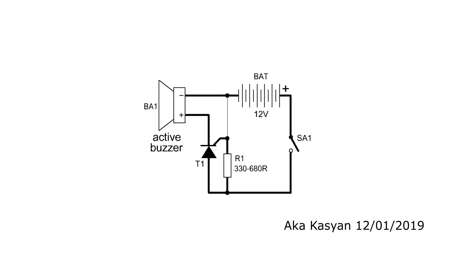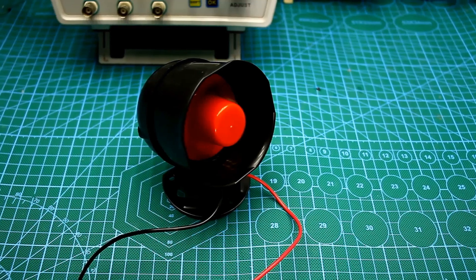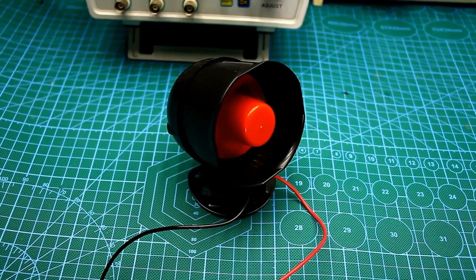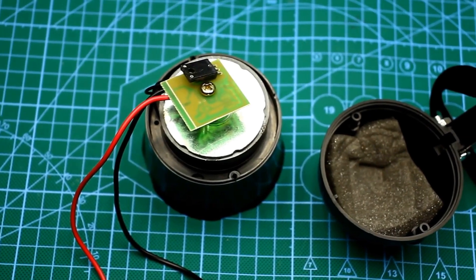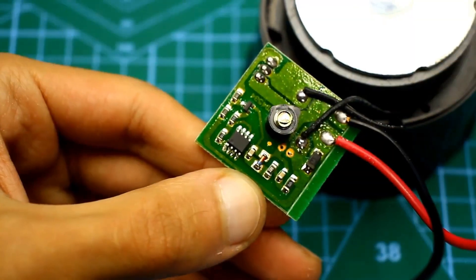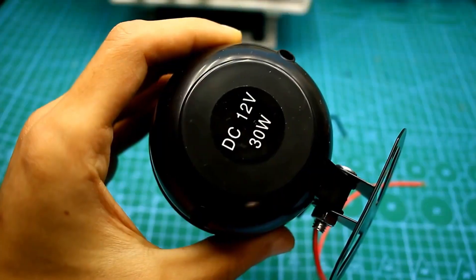The operating principle of such devices is very simple. In this circuit, an active head from an alarm system is connected to the thyristor. This head contains everything necessary within itself. It's enough to apply voltage to it, 12 volts, and it will activate, emitting unbearable sounds.